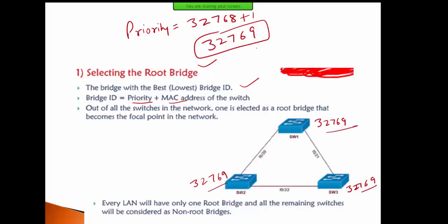If the priority is the same, then what matters is the MAC address. The switch with the lowest MAC address becomes the root bridge. I will show you with three switches.